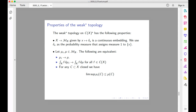Further equivalent conditions: for every closed set C, the lim sup of mu_i(C) is less than or equal to mu(C); and for every open set U, the lim inf of mu_i(U) is greater than or equal to mu(U). These conditions are all covered in most standard references — most of them appear in Peter Walters's book, though not all. We will not prove these here.